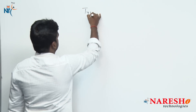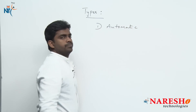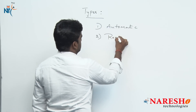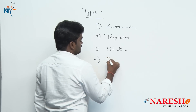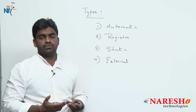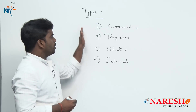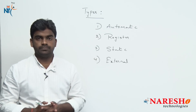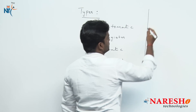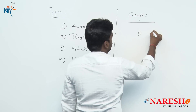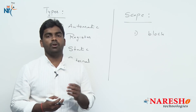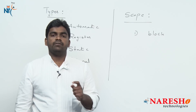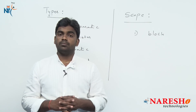How many types of storage classes do we have? Totally four types: the first one is automatic storage class, second one is register storage class, third one is static storage class, and fourth one is external storage class. Along with this, if you want to declare a variable inside the program, in how many contexts can we declare a variable? This is nothing but the scope of a variable.